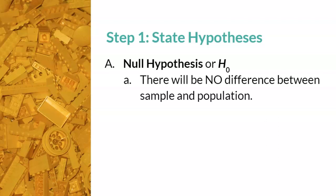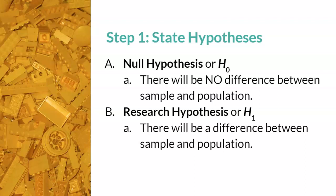But predicting that nothing will happen is boring. Therefore, we need a research hypothesis that something will happen. In statistical notation, it is h subscript 1. It is also known as the alternative hypothesis. Here, we are hypothesizing that there will be a difference when we compare the sample to the population.